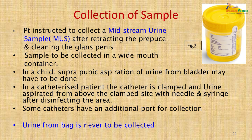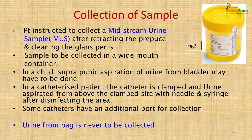In children, a mid-stream sample may not be possible; small pouches can be placed on the perineal area to collect urine directly, but suprapubic aspiration is often needed. In catheterized patients, the catheter is clamped and urine aspirated from above the clamp with a needle and syringe after disinfecting the area. Some catheters have an additional port for collection. Urine from the bag should never be collected, and catheterization solely to collect urine for culture is not recommended.